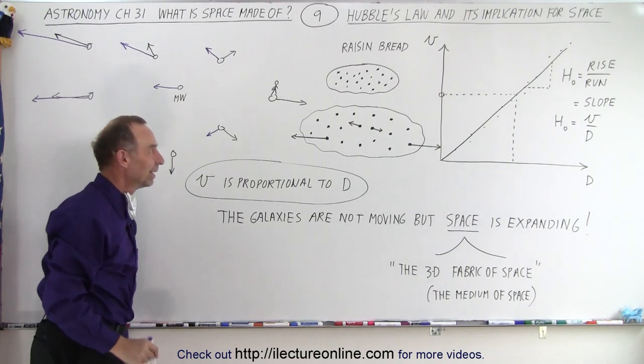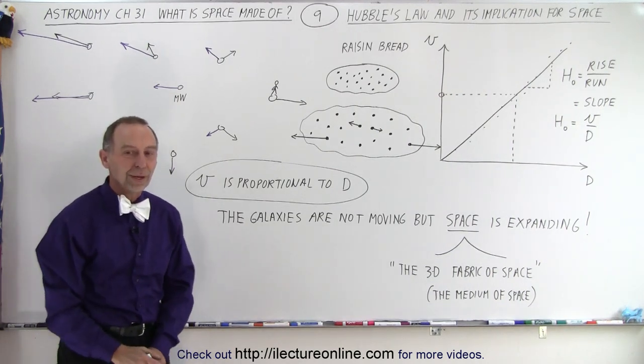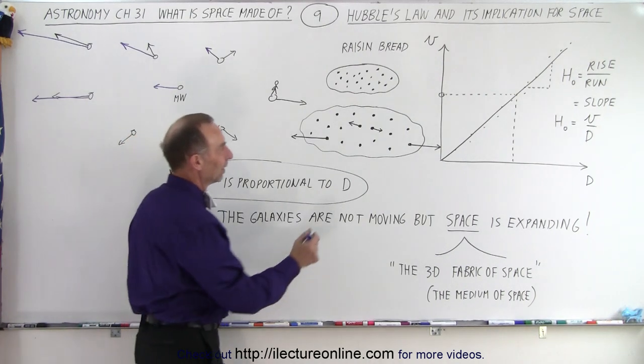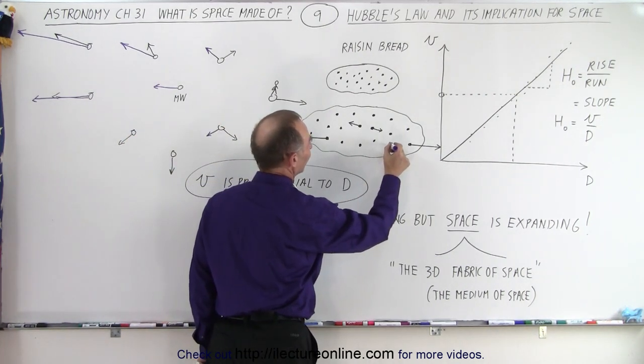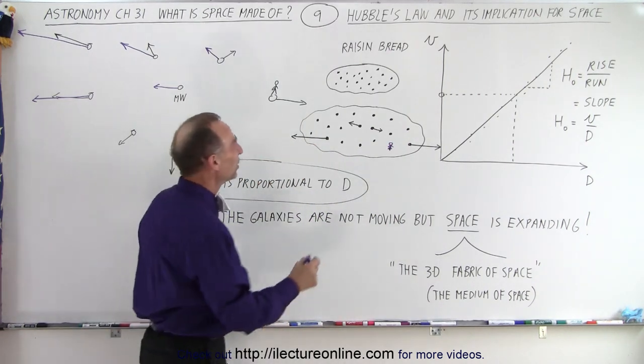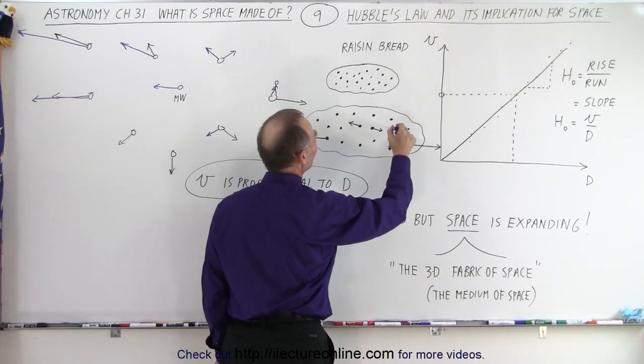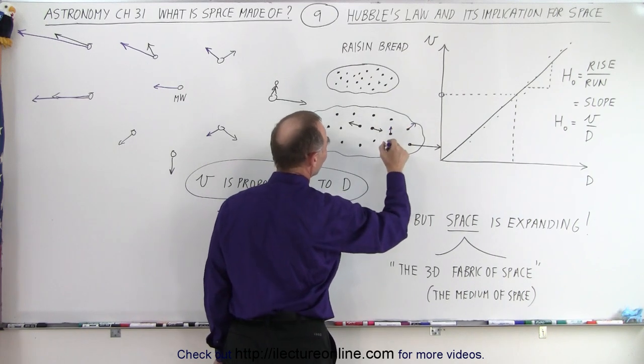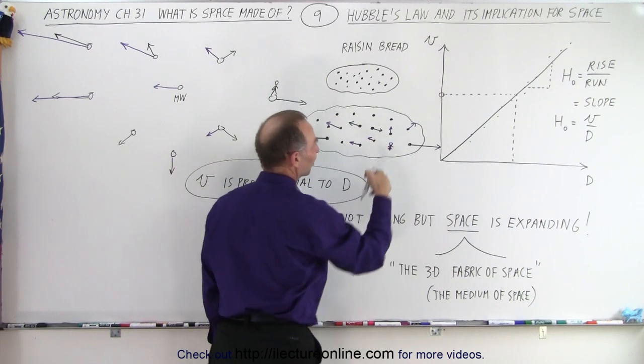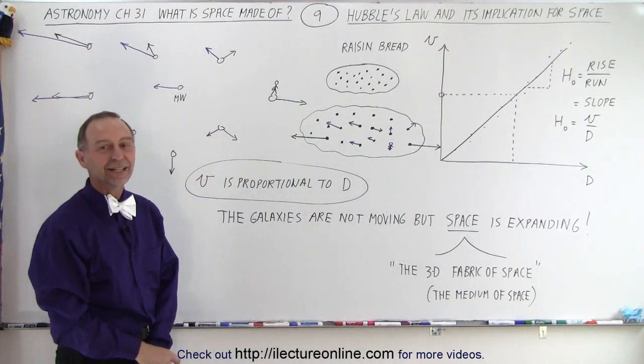Same thing with the raisins. You're correct. You're looking at a raisin on the side of the raisin bread. So if you are an alien living on this raisin, you would see all the other raisins move away from you. And depending upon how far away they are, they will move faster and faster and faster, as seen by that alien.